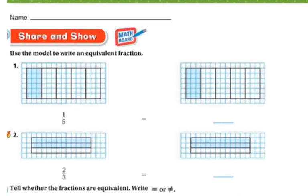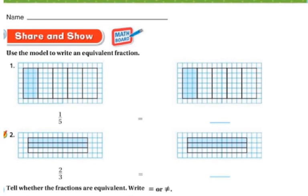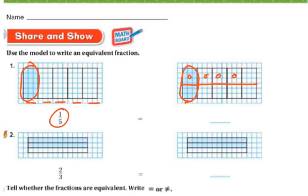On this next one, they want us to write a model that's equivalent. This one is one-fifth — there are five parts and one of them is shaded. To find an equivalent fraction, I'm going to cut it all the way across in half. So now, instead of having fifths, I have ten parts. And in the ten parts, two of them are shaded. So two-tenths and one-fifth are equivalent.